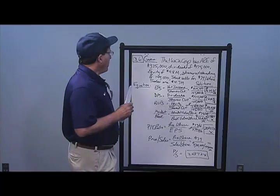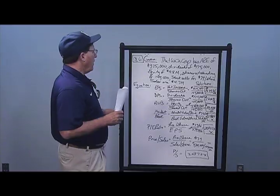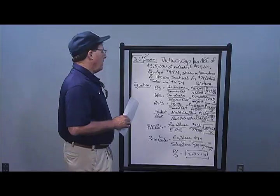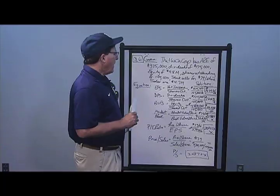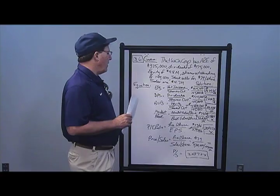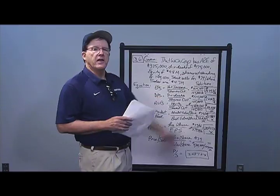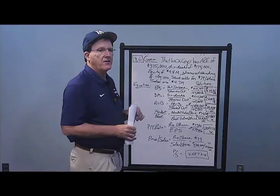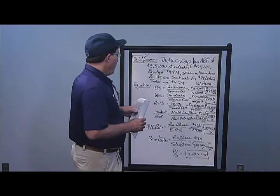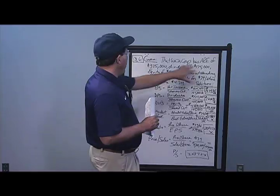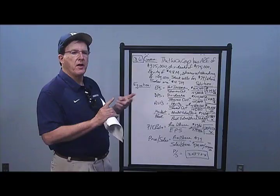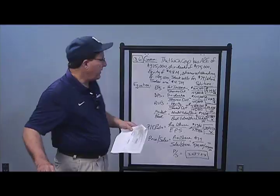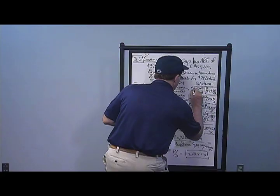In Problem 6, That Which Corporation has additions to retained earnings of $375,000, dividends of $175,000, equity of $4.8 million, shares outstanding of 145,000, stock price of $79 per share, and sales of $4.7 million. For earnings per share, earnings equals net income. I'm not given net income directly, but net income equals dividends plus retained earnings, so I add those two numbers in the numerator.